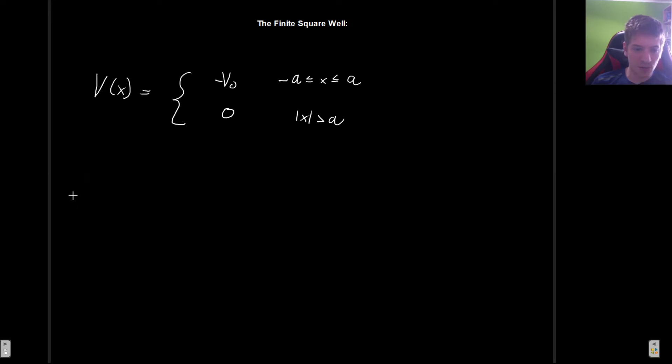Okay, so what this is going to mean when we sketch this is that the finite square well is a kind of potential that looks somewhat like this. So potential as a function of x, and this is going to be minus a, and this is going to be a. I'm going to use red actually. So it's going to be some well, and the depth is going to be minus V₀.